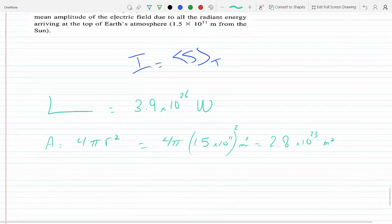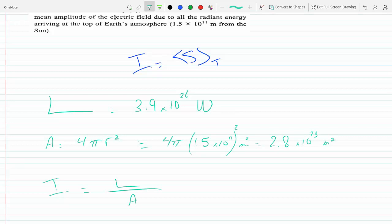And now we can find the irradiance, which is the power intensity—I mean luminosity—divided by the area, because that's watts per meter squared. So this is 3.9 times 10 to the 26 watts, which is joules over meter squared.